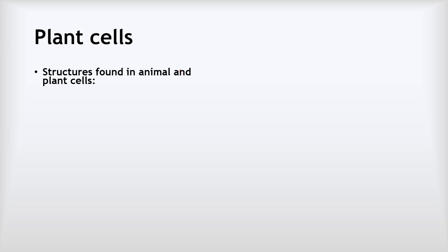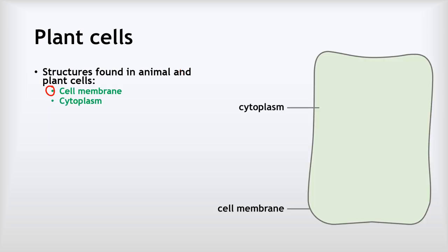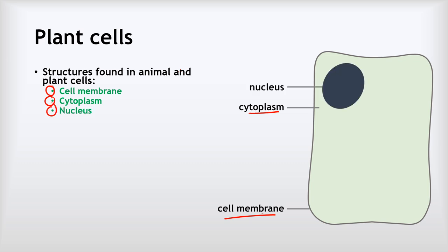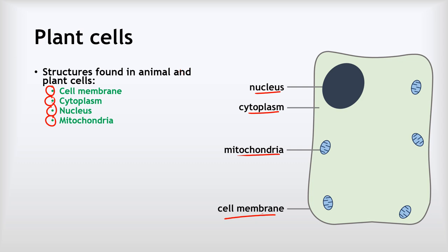Let's start by recapping what we know about plant cells. There are a number of things found in both animal and plant cells. We've got the cell membrane, which controls what enters and leaves the cell, and then the cytoplasm, which is where all the chemical reactions take place. Next we have the nucleus, which contains the DNA and controls the activities of the cell. We have mitochondria, where respiration takes place to provide energy, and ribosomes to make proteins.